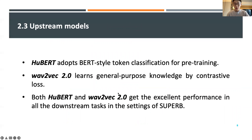For upstream models, in this paper we use two models: HuBERT and wav2vec 2.0. HuBERT adopts BERT-style token classification for pre-training, while wav2vec 2.0 learns general-purpose knowledge by contrastive learning. The main reason we choose these two models is that in the SUPERB settings, both models achieve excellent performance across all downstream tasks.